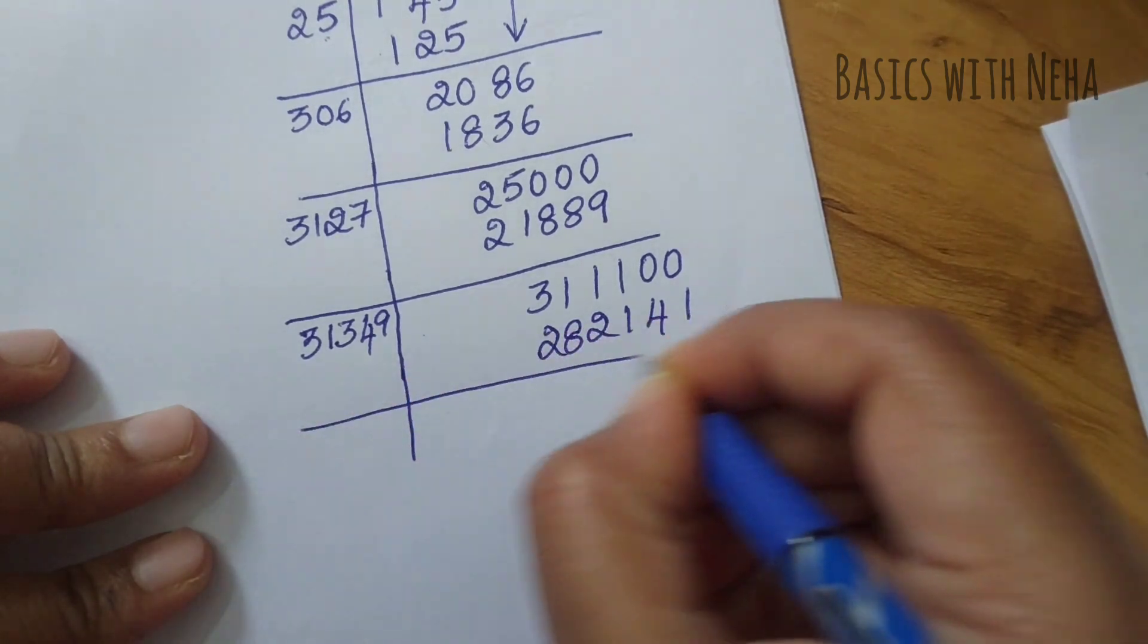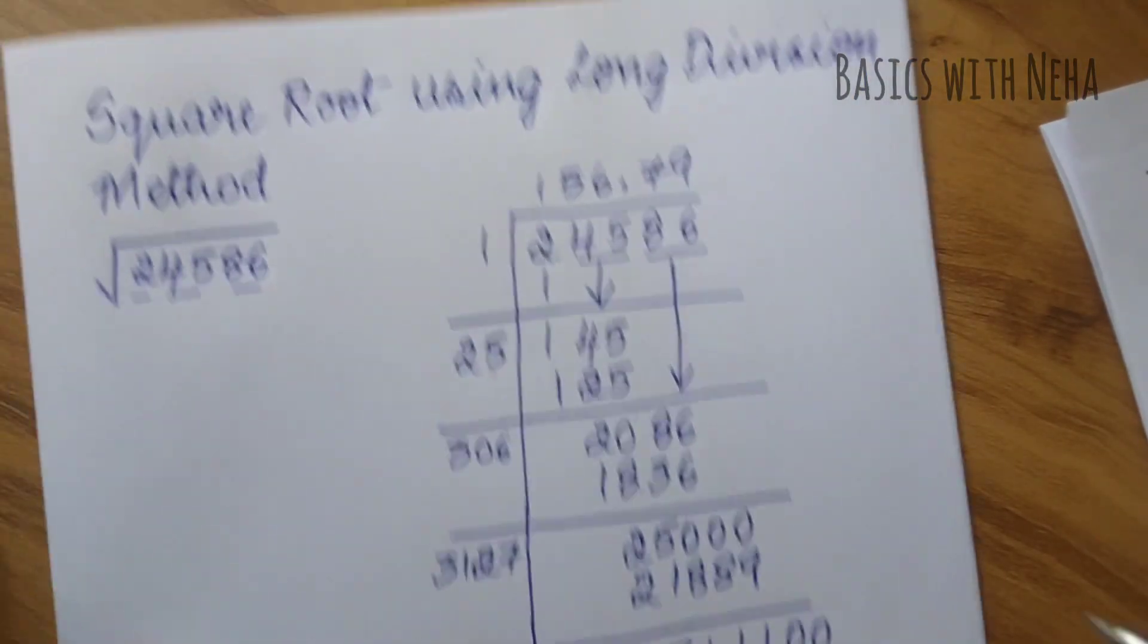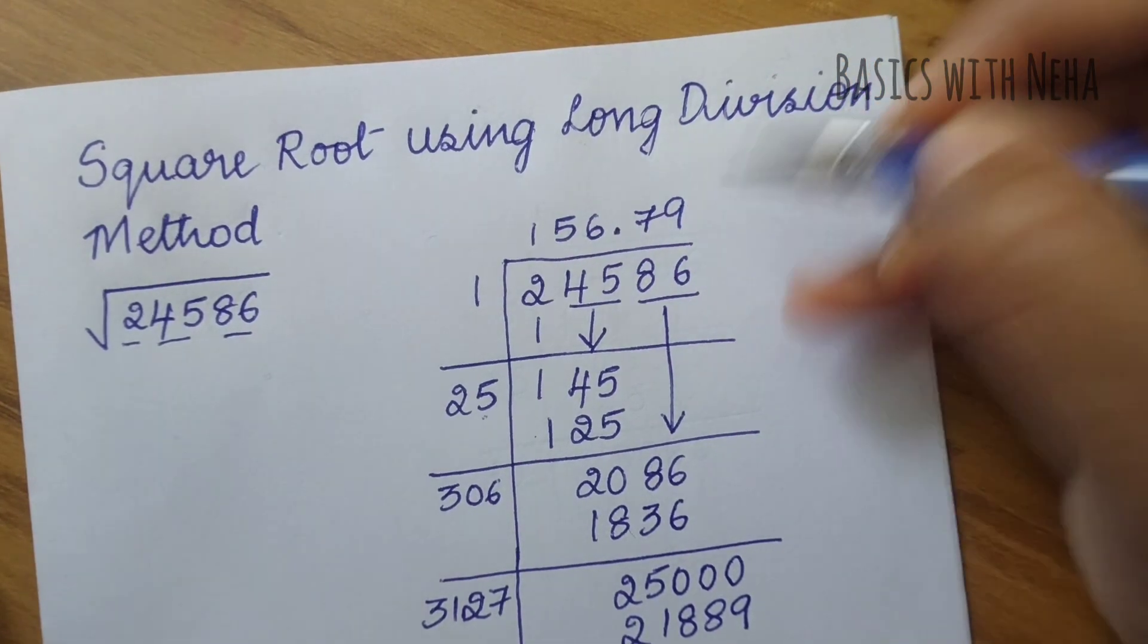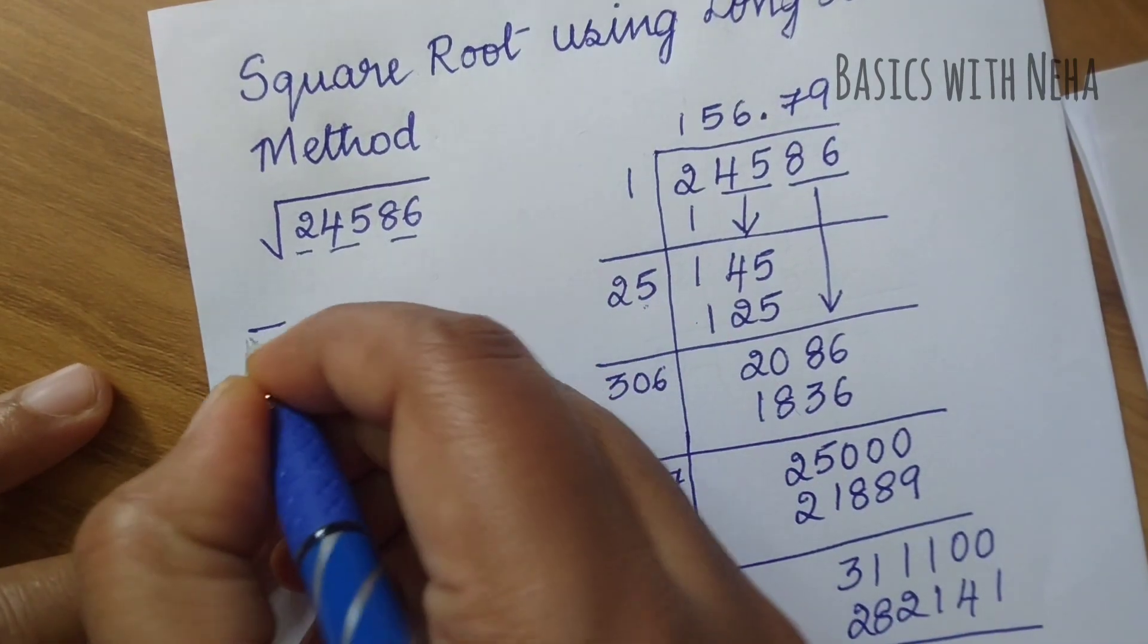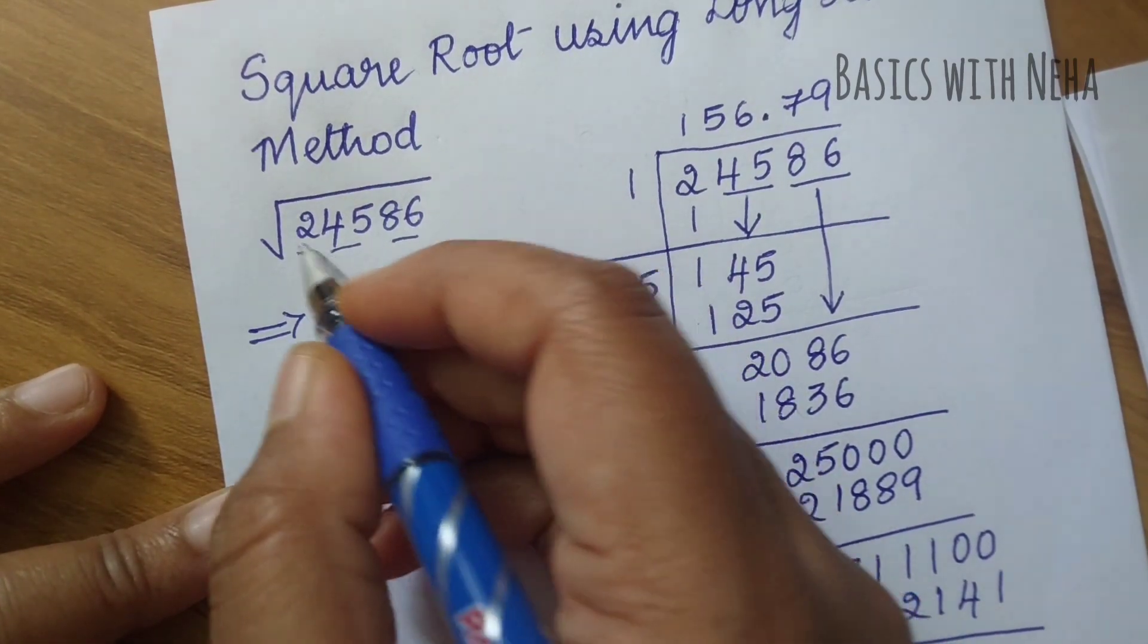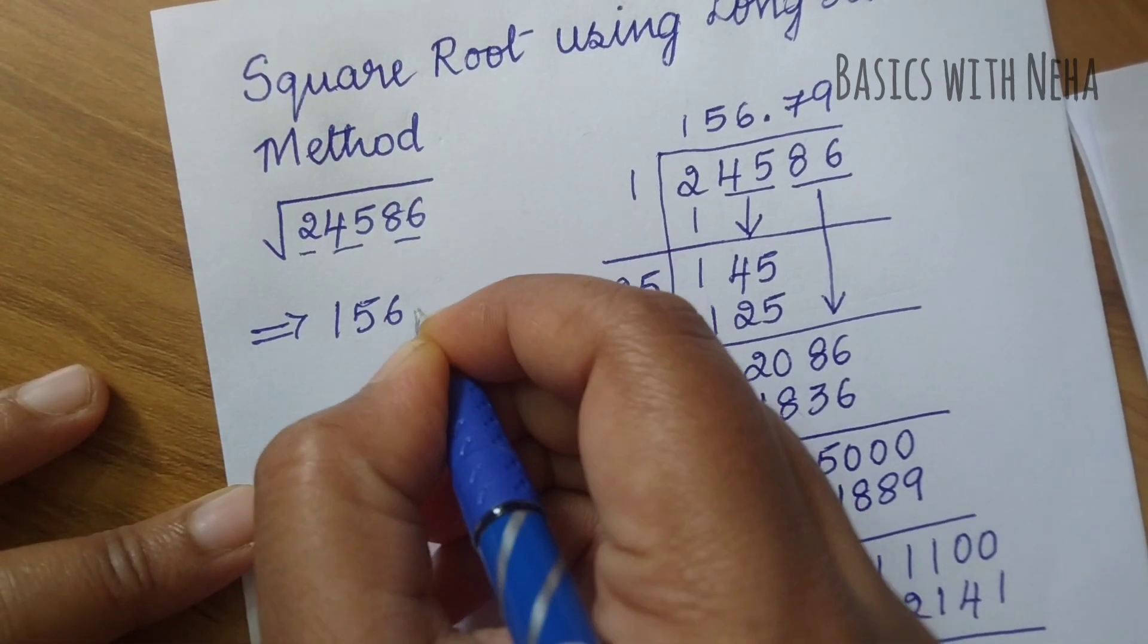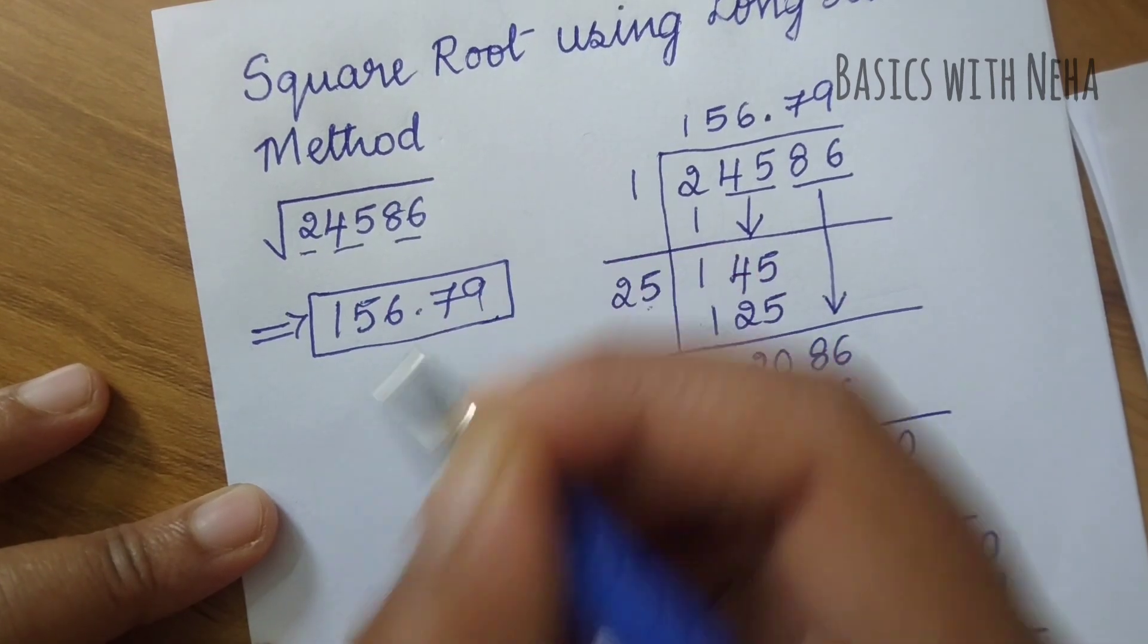Now I have to subtract this. I can keep doing it, but if I see the answer is 156.79, I can just stop it here. I'll stop it at two decimal places. My final answer, the square root of 24586, will be 156.79.